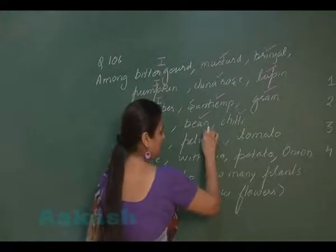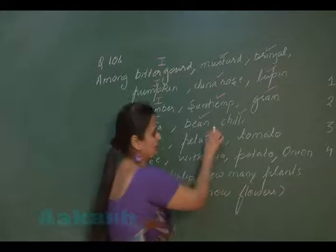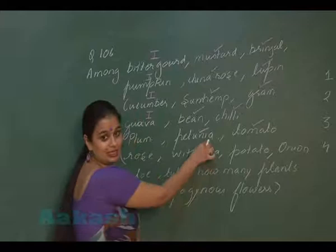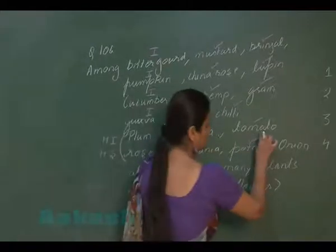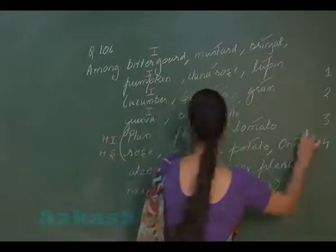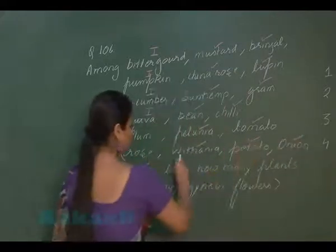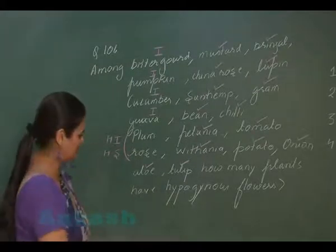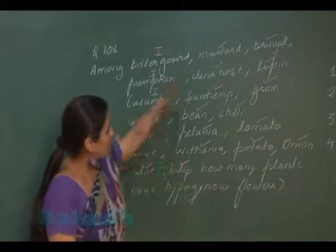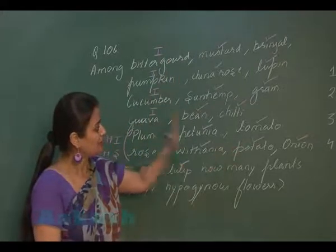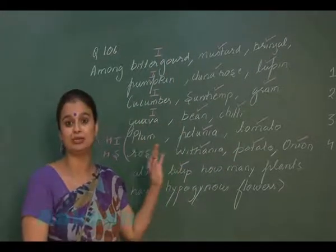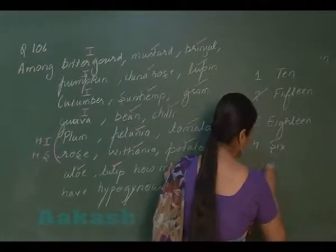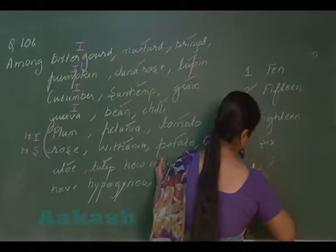Petunia again has superior gynoecium, belongs to the Solanaceae family. Tomato — Solanaceae — superior. Vedania — Solanaceae — superior. Potato also — Solanaceae — superior. Onion, aloe, tulip belong to the Liliaceae family — again superior gynoecium, meaning hypogynous flowers. So amongst all these examples, there are 15 which show superior gynoecium and hypogynous flowers. The right answer is option 2.